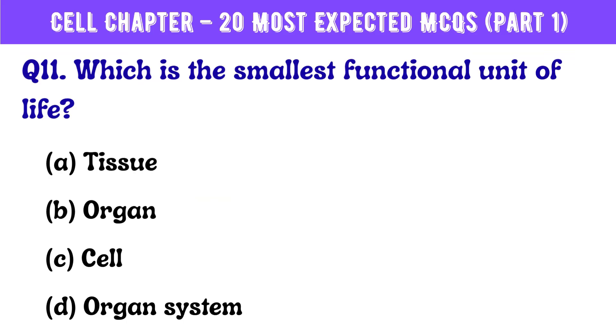Question number 11. Which is the smallest functional unit of life? Correct answer is option C: Cell.